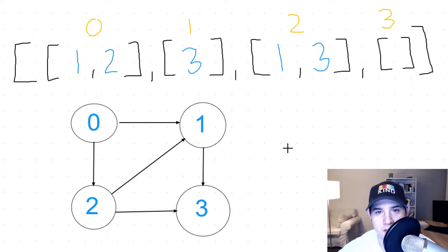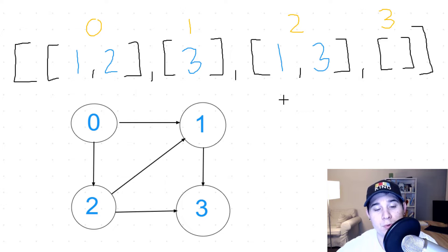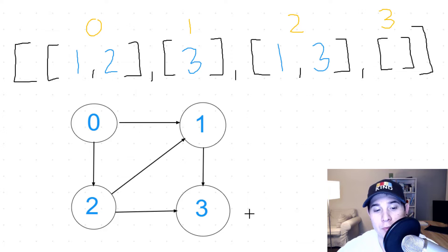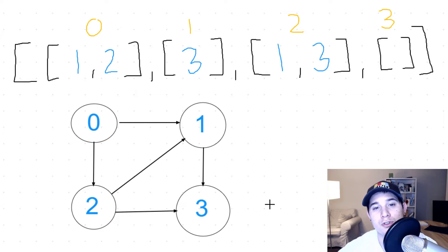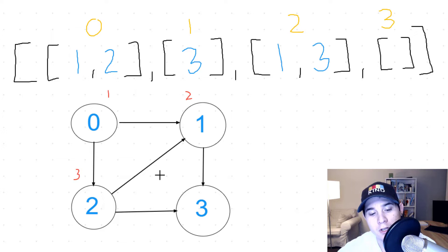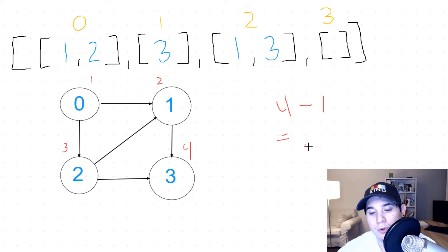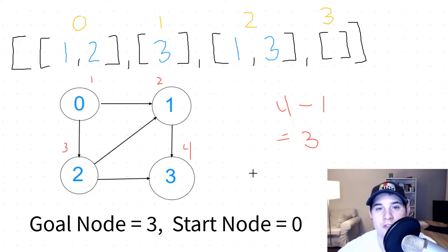To explain this problem in a bit more detail, I'm going to go over an example. We are always given an acyclic graph, which pretty much means we are never going to have a cycle. So if we had a graph with nodes 0, 1, 2, 3 and their appropriate connections, you can see that nowhere in this graph are we going to get stuck in an infinite loop. We need to find all paths from node 0 to the number of nodes minus 1. We have 4 nodes total, so 4 minus 1 means node 3 is our goal node and 0 is our start node.